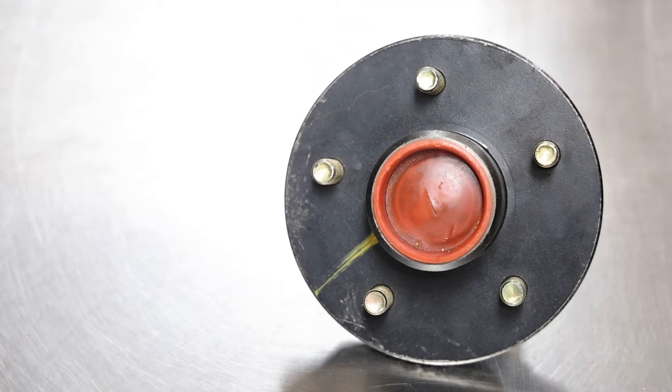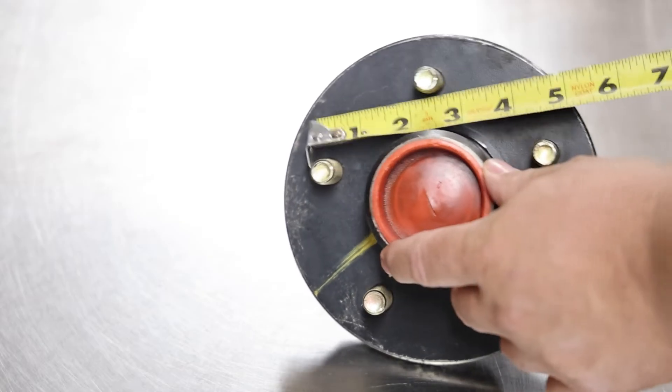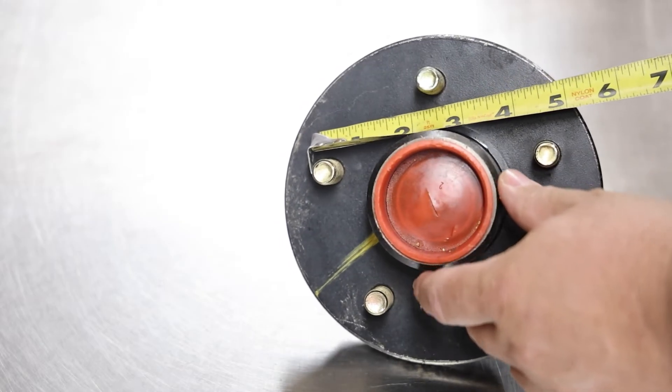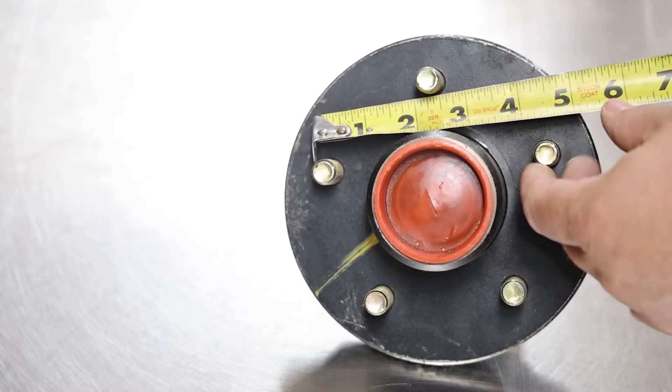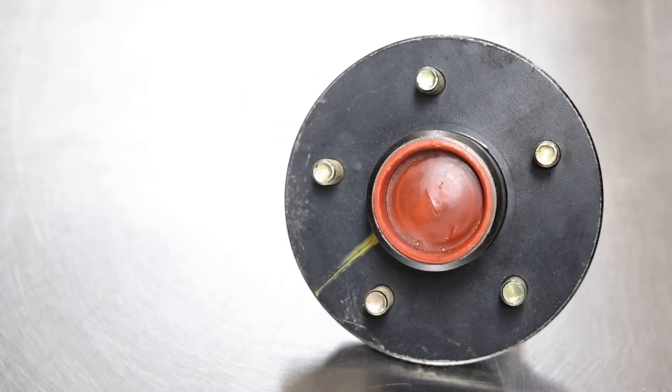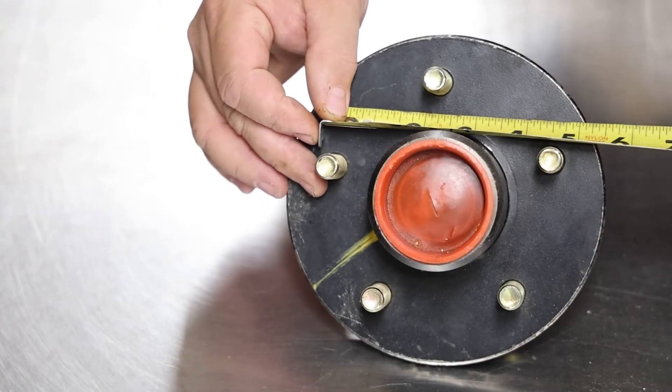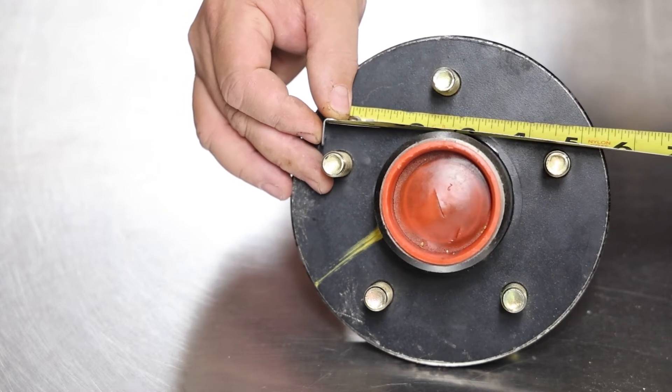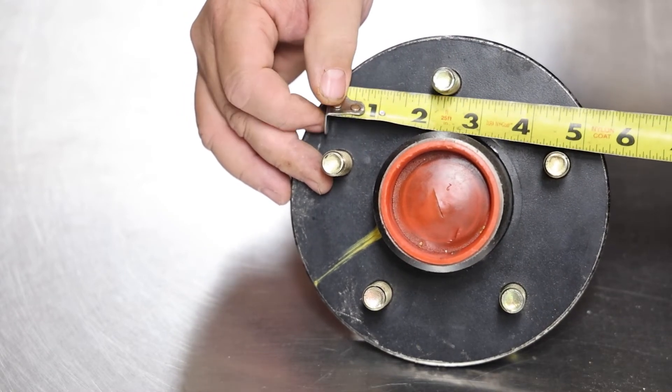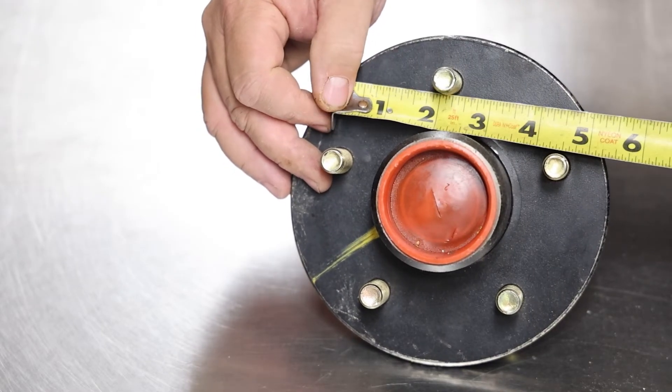So the reason we show you that other option first is because on a trailer hub, a lot of times it's hard to hook to the back side here and get an accurate measurement. But if we look here, let me see if you can see it there on the camera. But this is a five on four and a half bolt pattern.